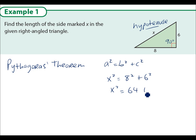So x squared is equal to 64 plus 36. These add up to be 100. So x is the square root of 100, which is 10.